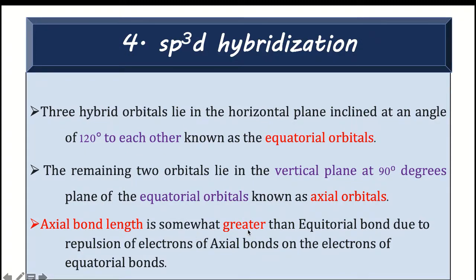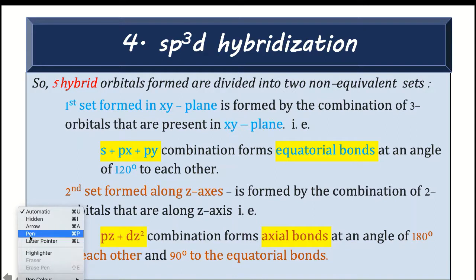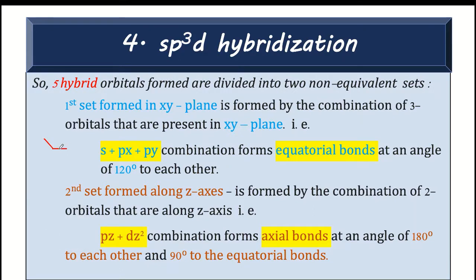Axial bond length is somewhat greater than the equatorial bond length. These five hybrid orbitals form two non-equivalent sets. The first set is formed in the xy plane — it is formed by the combination of orbitals lying along the x and y axes. So out of the total five — s, px, py, pz, and a d orbital — the xy plane set consists of s, px, and py combination, giving a trigonal arrangement with equatorial bonds at 120° to each other.